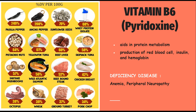Next we have vitamin B6, pyridoxine. Food sources include peppers, sunflower seeds, whey protein isolate — containing around 68% per 100 grams — and wild Atlantic salmon. It aids in protein metabolism and the production of red blood cells, insulin, and hemoglobin. It also purifies blood. Deficiency diseases caused due to vitamin B6 are anemia and peripheral neuropathy.